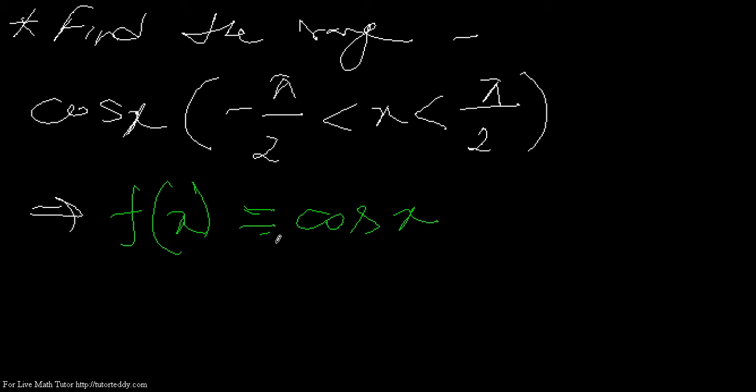So here we can see that for all values of x which lies between minus pi by 2 and pi by 2, we shall have this value of cosx lying between 0 and 1.